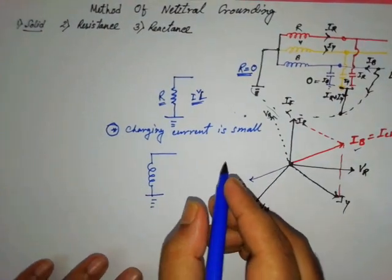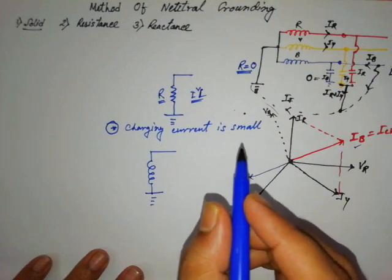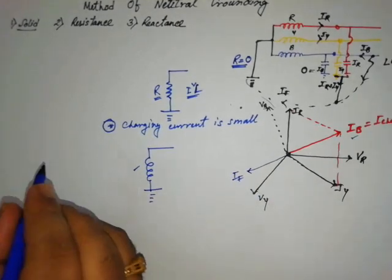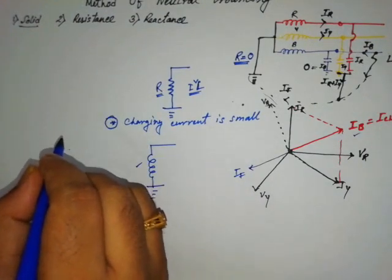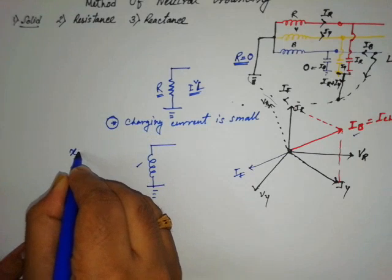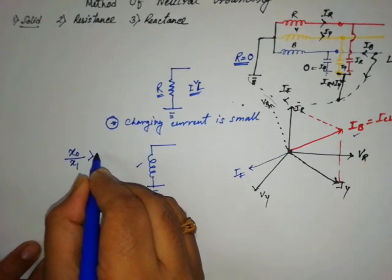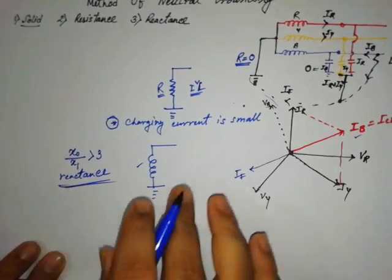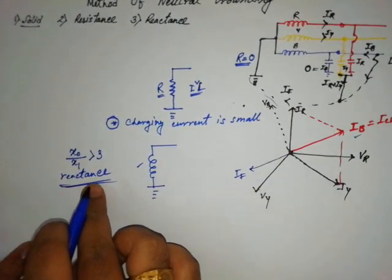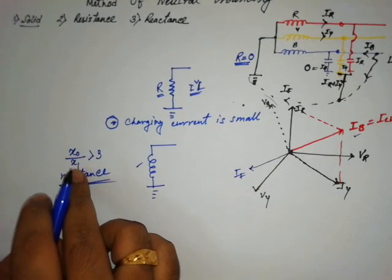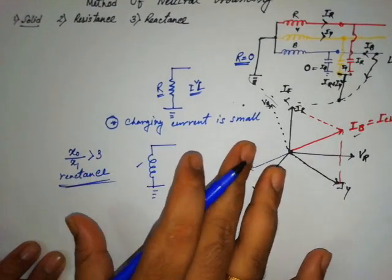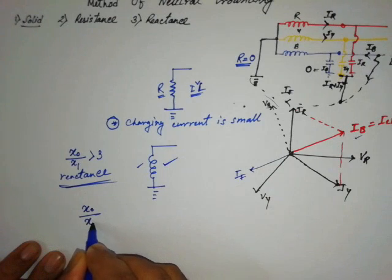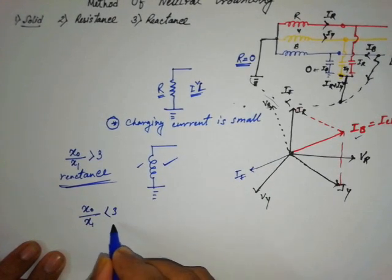There is a point about when we use the solidly grounded system and when we use reactance grounding. There is a formula: we know what is zero sequence reactance (X0) and positive sequence reactance (X1). If the ratio of X0 to X1 is greater than three, then we use reactance grounding, because X0 is much greater than X1, meaning there is a high charging current. If the ratio X0 to X1 is less than three, in that case we can use solidly grounded or resistance grounding.